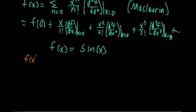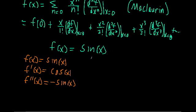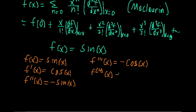Here's our function: f of x equals sine x. We can take the first derivative — f prime of x equals cosine x. We don't have to worry about the chain rule since the only thing in the argument is just our variable x. The second derivative, f double prime of x, is just the derivative of cosine, which is negative sine x. The third derivative is the derivative of negative sine, which is negative cosine x. The fourth derivative is the derivative of negative cosine — and if you notice, we actually recover sine x.